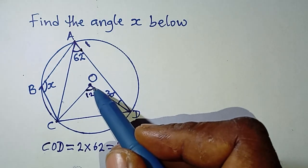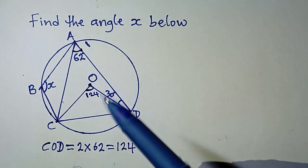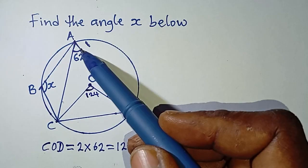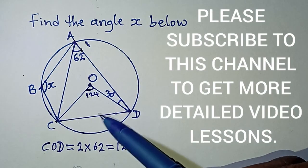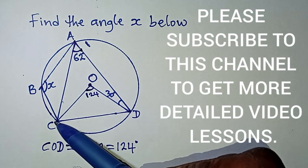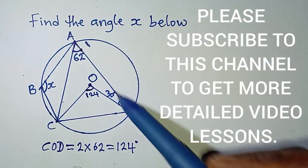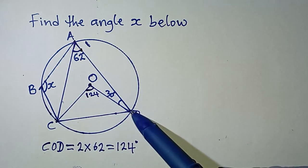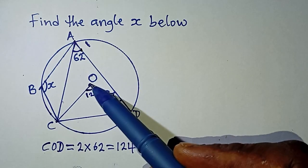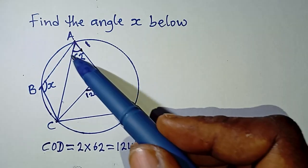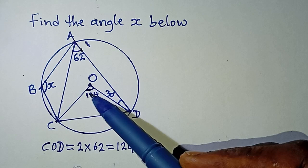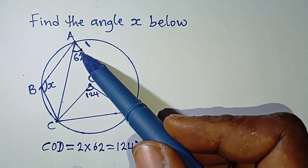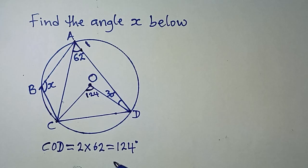The rule is that the angle at the center is twice that at the circumference. Also remember that the lines going to the circumference must come from the same point as the lines going to the center for this theorem to apply — that the angle at the center is equal to twice that at the circumference of a circle.